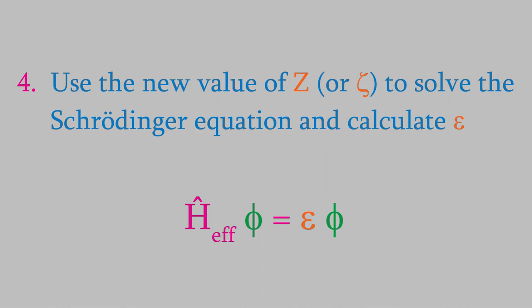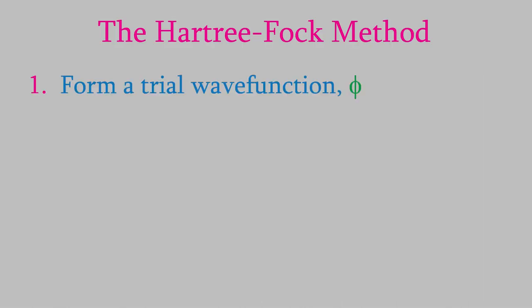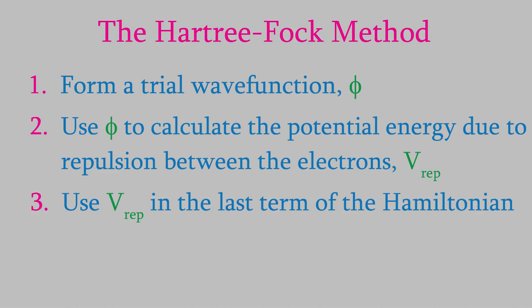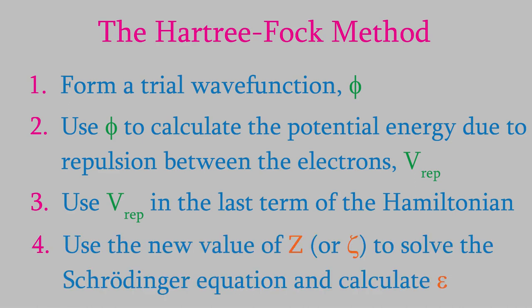We can now use the new value of z when we solve the Schrödinger equation and get the overall energy, and we can put that value of z, or zeta, into our trial wave function. So we've now gone through one cycle of equations in the Hartree-Fock method. We started with a trial wave function, then used it to calculate the repulsion between electrons in our system, then used that as the last term in the Hamiltonian. We used the Hamiltonian in the Schrödinger equation and found the value of z that gave us the minimum possible energy, then updated our trial wave function with the new value of z.